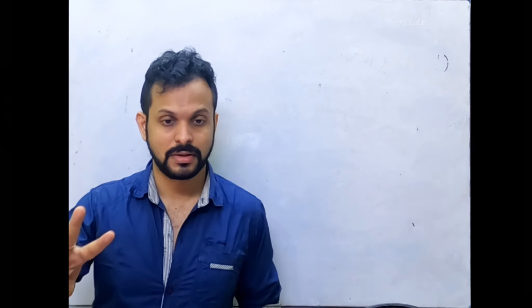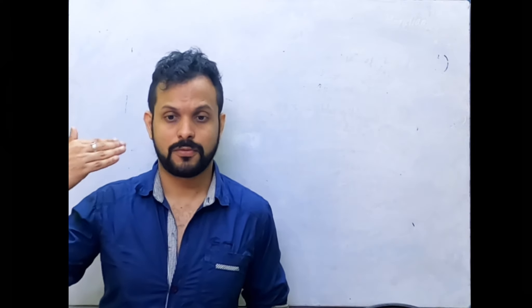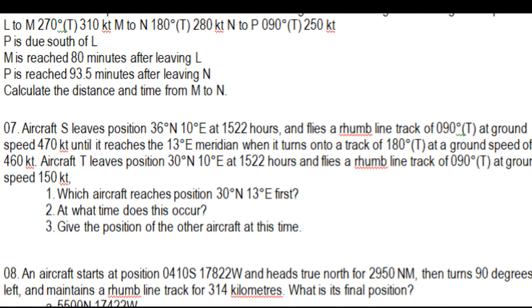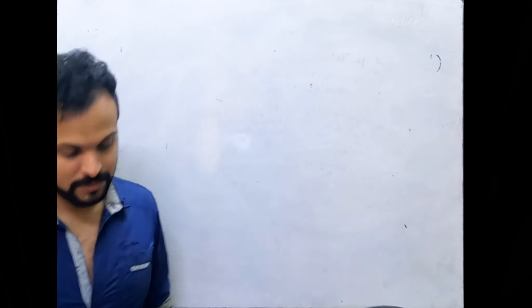So you have two different aircrafts. The start time is given and their individual tracks are given. We've done problems for a single aircraft before; now they've given two different aircrafts. Draw two different aircraft tracks on the same diagram and analyze them. What's asked: which aircraft reaches position 13° North, 13° East first, at what time, and what is the position of the other aircraft at that time. Take about five minutes, draw a diagram, analyze it, and I'll join you when you're done or stuck.